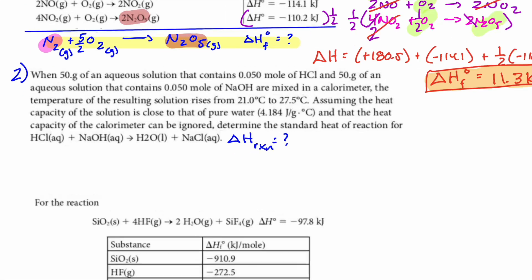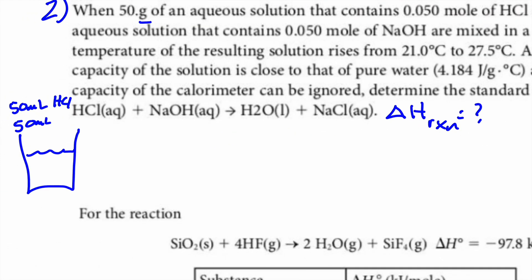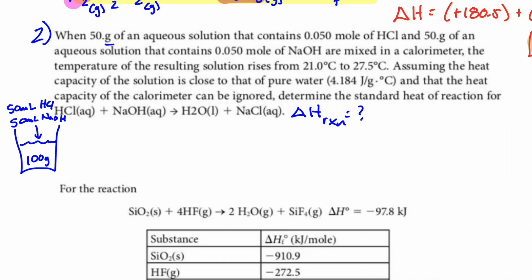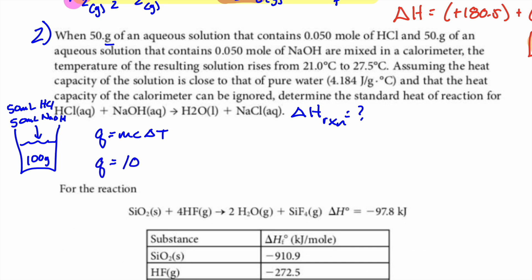You have 50 grams of HCl solution and 50 grams of NaOH solution — that's 100 grams of solution total. Since they tell you the specific heat capacity is basically that of water, milliliters become grams. The minute you see specific heat capacity, think Q = mcΔT. The mass of the solution is 100 grams.